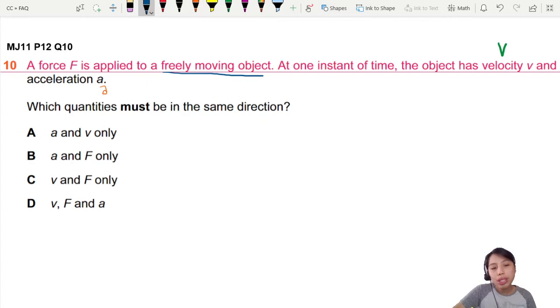Which quantities must be in the same direction? Between the choices you have acceleration, force, and velocity. How do you know what is pointing in the same direction? I'm going to tell you straight off that F and a must be in the same direction, but why?